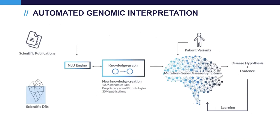To increase our work efficiency, about a year ago we started working with Emedgene to explore options for more automated genomic interpretation. Here is a high-level summary of the Emedgene platform. They have a knowledge database created from scientific literature and scientific databases. Through machine learning, they evaluate each variant using the patient's variants and phenotype, cross-referencing the knowledge database to form hypotheses. This process is automated for each variant across the exome.